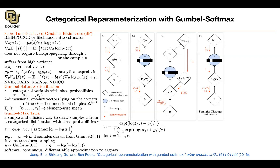Rather than having z's, you're going to have the equivalent version of them — let's call it y, or you could call it z-hat. So y is the equivalent version of z, where rather than using argmax, you are using softmax. This is the softmax function. Here you have your G, which you know how to sample. The log of pis we know, exponential function, everything else we know. This temperature — if you set the temperature to be very low, you're going to get your argmax function back.